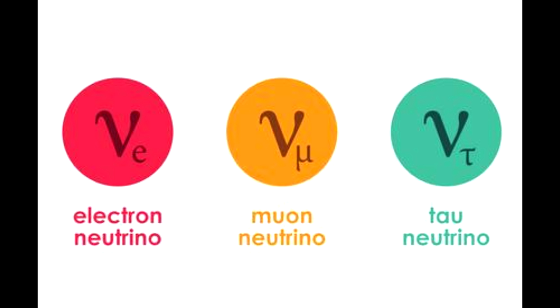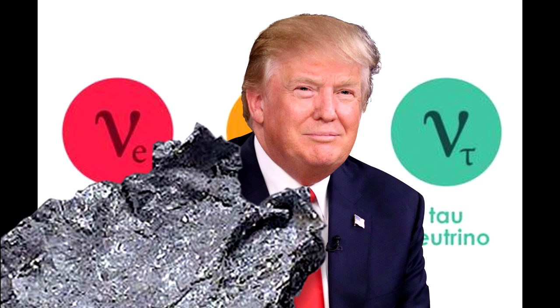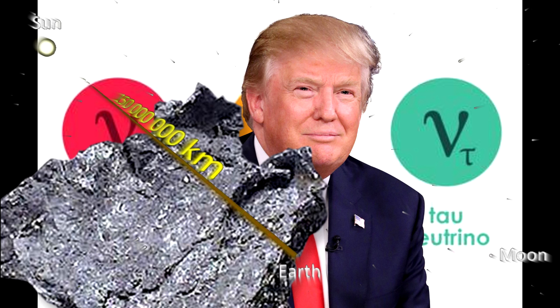In order to build a neutrino filter one would have to build a wall made of lead, one light year thick. And still more than half of the neutrinos would pass through it. Single graviton detection isn't practically possible.